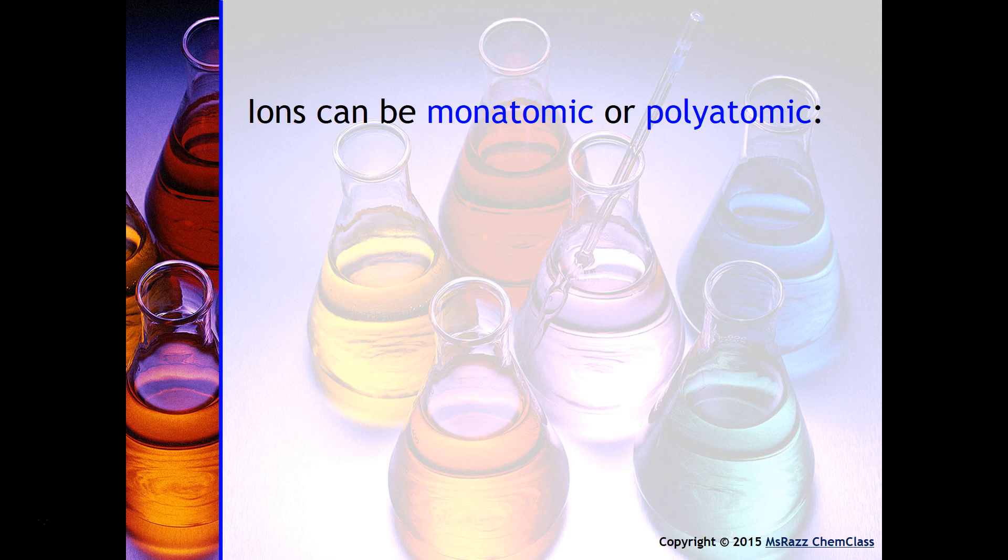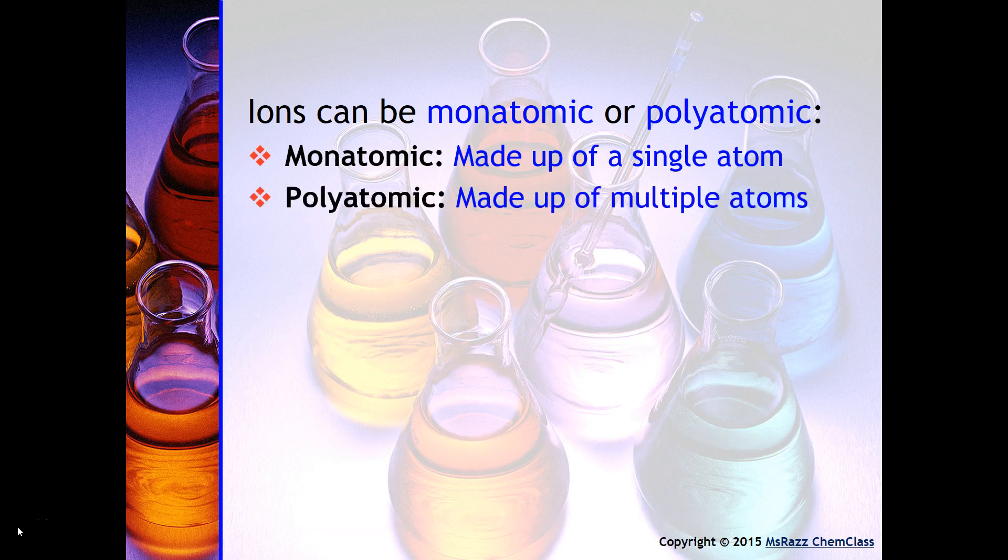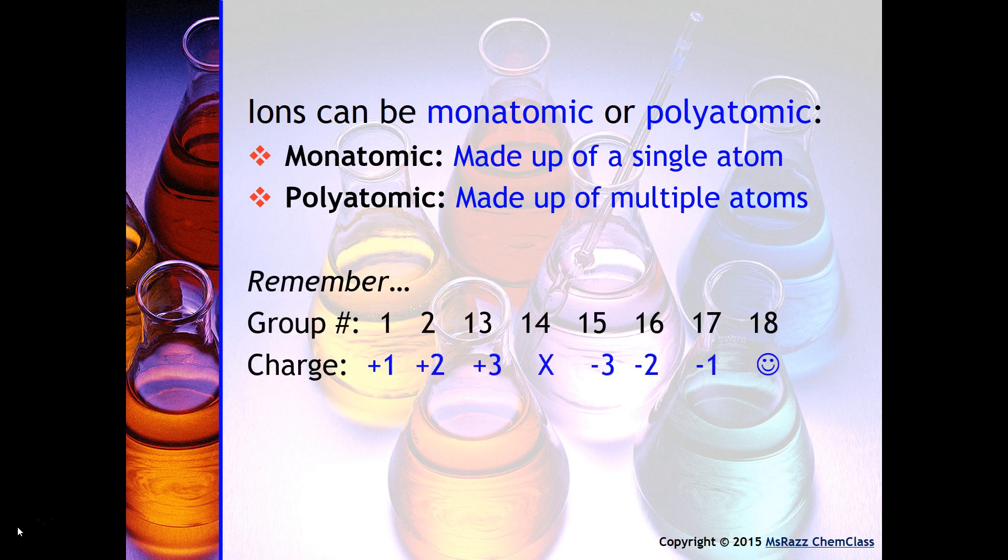Ions can be what we call monatomic or polyatomic. Up until this point we've been working with monatomic. A monatomic is made up of a single atom, whereas a polyatomic is made up of multiple atoms.